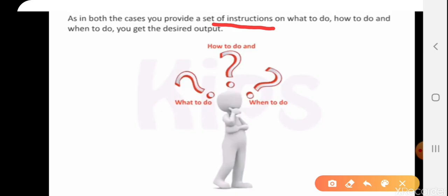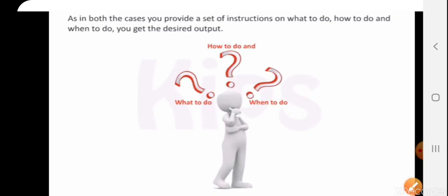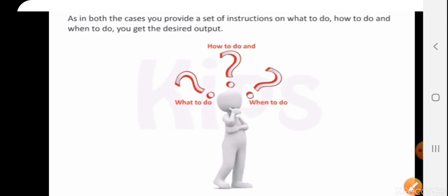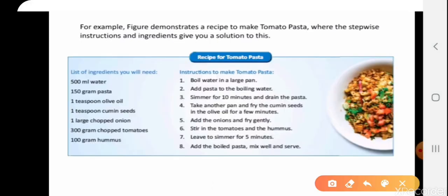We also need to know three things: what to do, how to do, and when to do. In a computer as well, we need to provide a set of instructions and ingredients — which we call data — in order to get the desired output.